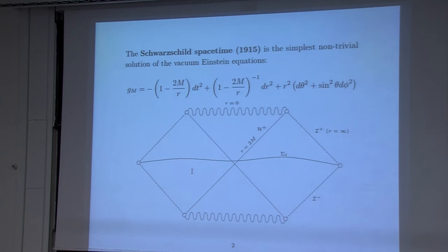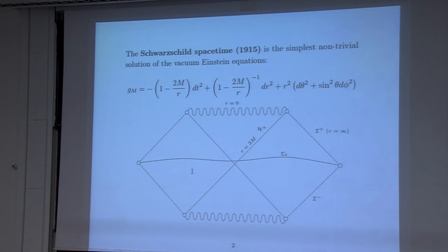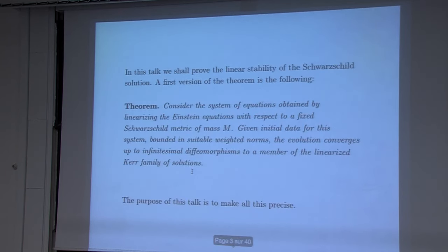We all know that the Schwarzschild family is part of a larger family, the two-parameter Kerr family, whose nonlinear stability we're interested in. But since this was talked about on Tuesday in Mihaly's talk where he introduced the conjecture, I will just skip this and go straight to the main theorem of the talk.